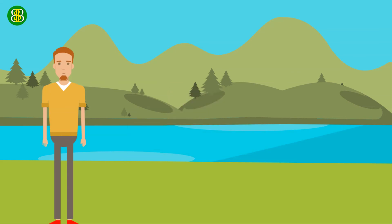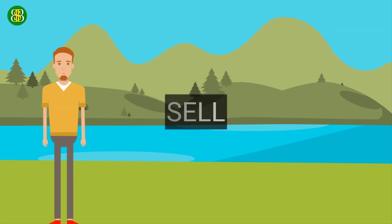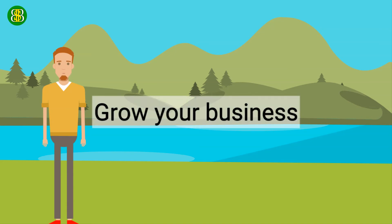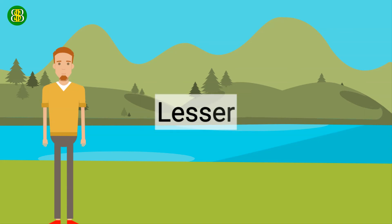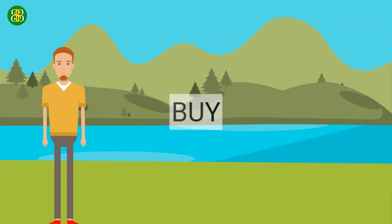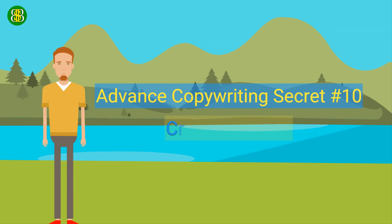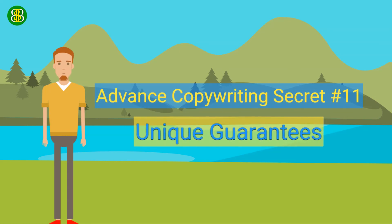Remember, in the marketplace guarantees are very powerful ways to sell. However, as you grow your business and the more authority you have in the marketplace, the less you have to use guarantees to close — people are just happy to work with or buy from you. So there you have it: advanced copywriting secret number 10, create scarcity, and number 11, unique guarantees.